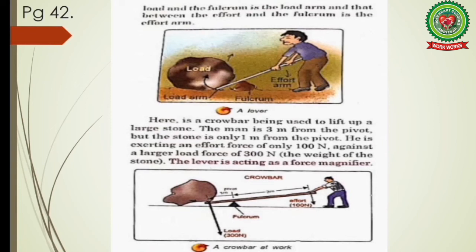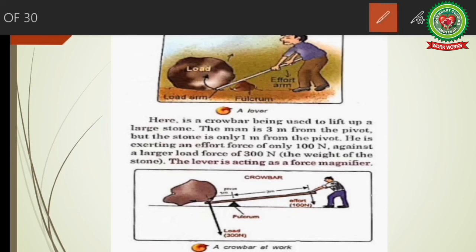In the crowbar example from the figure, the man is three meters from the pivot (fulcrum), but the stone is only one meter from the pivot. So the effort arm is three meters and the load arm is one meter. Since effort arm is greater than load arm, less effort is required. The man exerts an effort force of only 100 newtons against a load force of 300 newtons — so this lever is acting as a force magnifier.